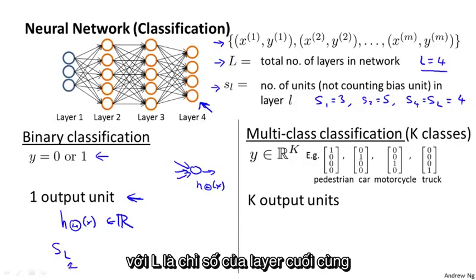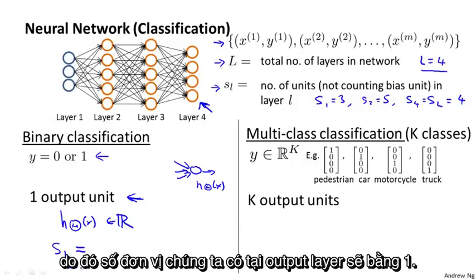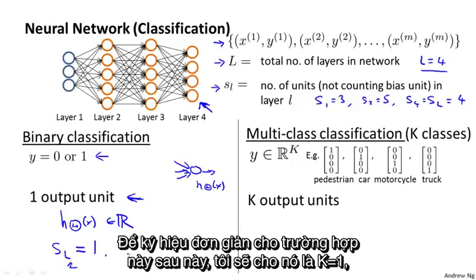And the output of the neural network would be h(x) is going to be a real number. And in this case, the number of output units s_L, where L is again the index of the final layer, the number of units we have in the output layer is going to be equal to one. In this case, to simplify notation later, I'm also going to say K equals one.